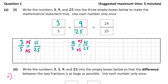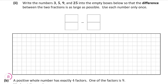Now let's move on to part 2. Part 2 wants us to write the numbers 3, 5, 9 and 25 into the empty boxes so that the difference between the two fractions is as large as possible, using each number only once. Whenever we're taking one fraction from another to get the biggest difference, we want the biggest fraction first and subtract the smallest fraction from it.